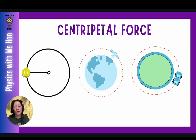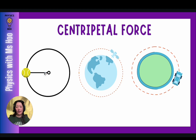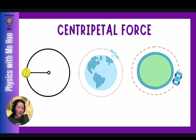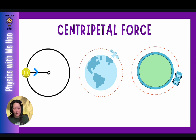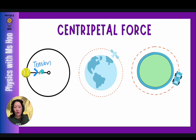Any time an object is moving in a circular fashion, there is always centripetal force. Sometimes centripetal force can appear as different kinds of forces in different situations. For example, if you have a ball tied to a string and you spin it round — I've got a key here and I'm spinning it — the string is what's keeping the key in a circular fashion. The string has tension, so in this case the centripetal force is also the tension acting along the string.